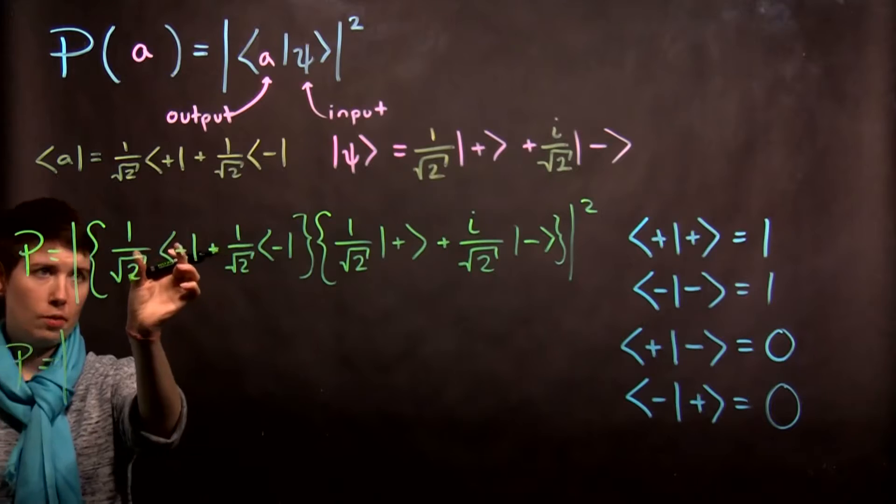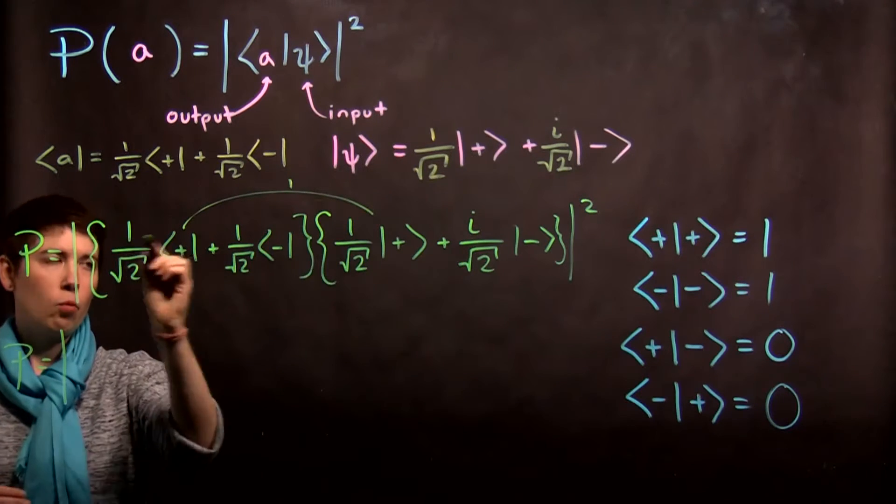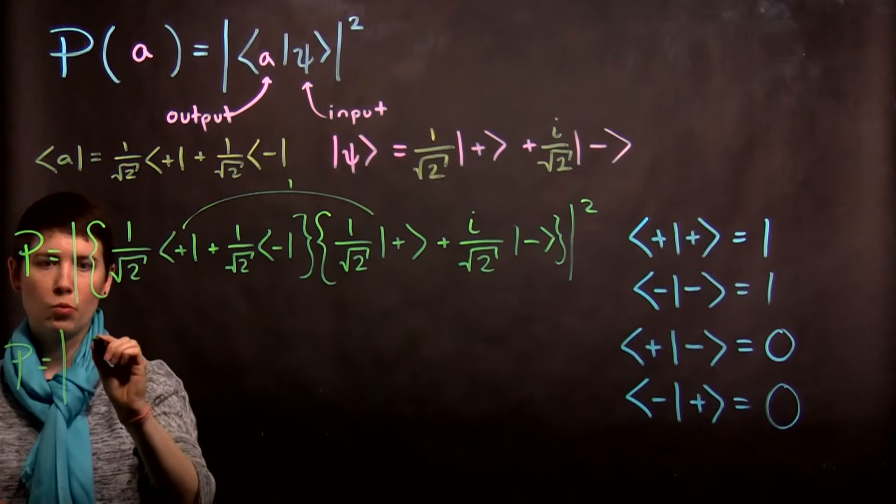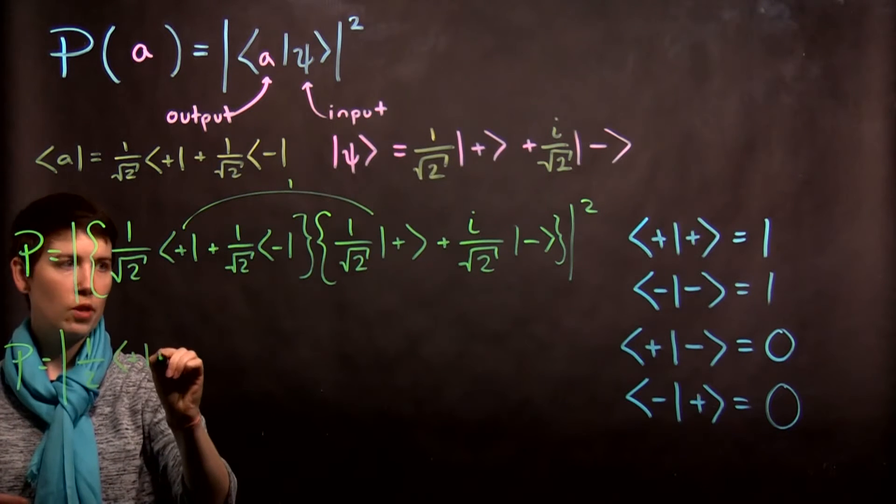So our first one, this is going to be one. I have one over square root of two times one over square root of two, which is one over two. And I have a plus with a plus.